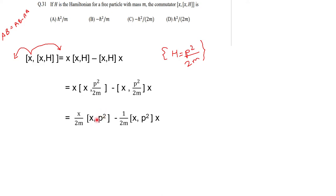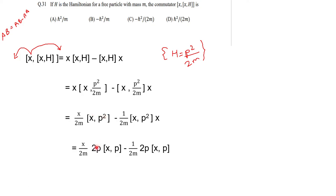The next step: we are going to use the derivative of p². We use the formula d/dn(x^n) = nx^(n−1). So the derivative of p² is 2p, and we get [x, p²] = 2p[x, p]. So x/2m into 2p[x, p] minus 1/2m into 2p[x, p] — with x still present — and we are taking the derivative of p² getting 2p with [x, p].